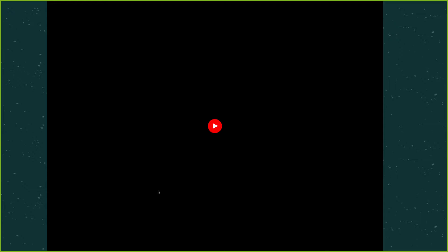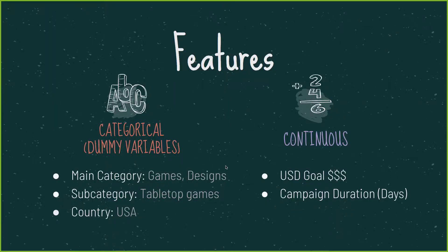Country is also a categorical variable, such as the United States. The continuous variables that I analyzed were the U.S. dollar goals and the campaign duration in days.